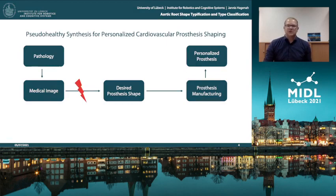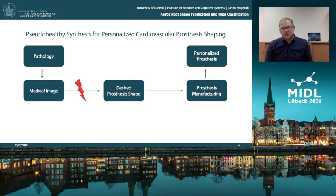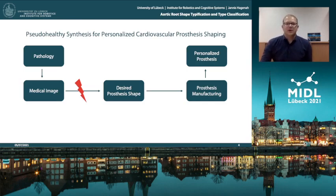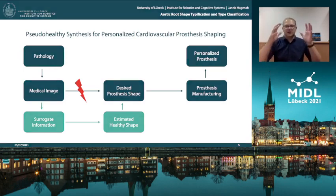Just imagine that the pathology induced, for example, a deformation of the organ at risk, so it's bigger than it should be. Then obviously the medical image only shows a pathological shape, and this is not the desired prosthesis shape. So the only information we can extract from the medical image is surrogate information, for example, the surrounding tissue or the pathological shape.